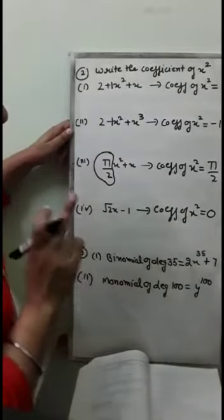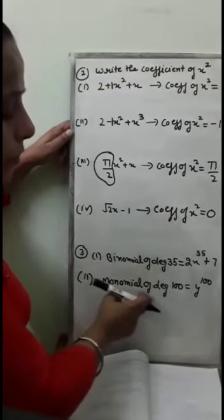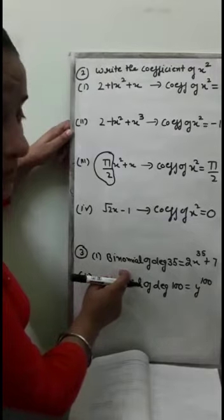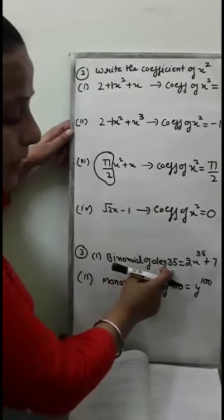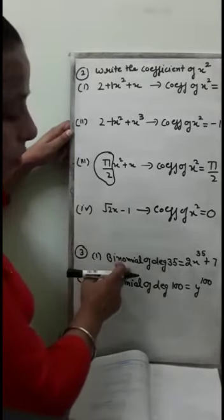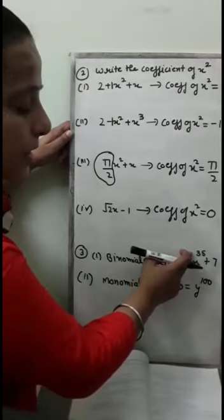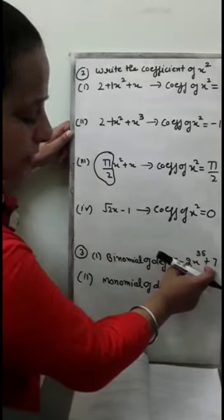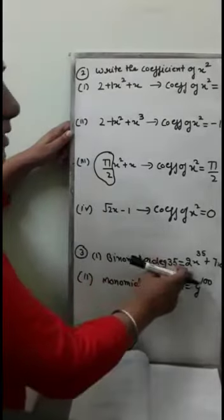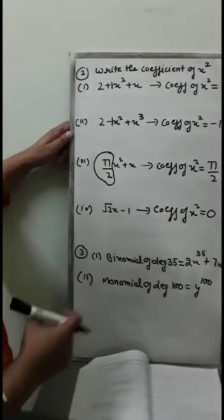In sum number 3, you are asked to write a binomial of degree 35 and a monomial of degree 100. Binomial means two terms in the statement. Degree 35 means the highest power of the variable should be 35. An example of a binomial of degree 35 is 2x raised to the power 35, plus 7x. These are two terms and the highest power of the variable is 35.